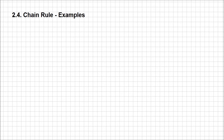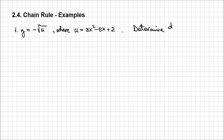For the first example, I'm going to take y equals minus square root of u, where u is the expression 3x squared minus 5x plus 2, an expression in regards to x. What you need to determine here is dy/dx. You notice how y is in regards to u, while u is in regards to x. Therefore, to determine the derivative dy/dx using the Leibniz notation, it's equal to dy/du times du/dx.